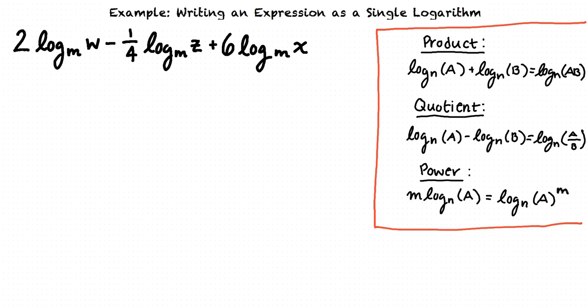First, we will use the logarithm of a power property to result in the following. Log base m of w to the power of 2 minus log base m of z to the power of 1 fourth plus log base m of x to the power of 6.